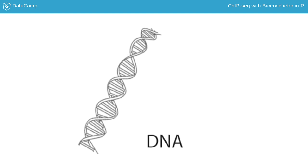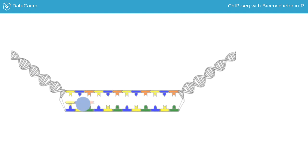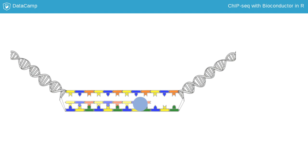The function of a cell is in large part determined by the genes that it expresses. Genes encoded in the DNA that makes up the genome are transcribed into RNA and then translated into proteins. The resulting proteins are responsible for carrying out the cell's function.